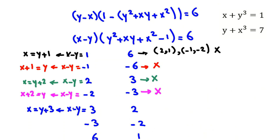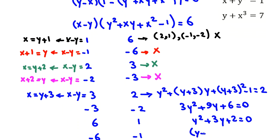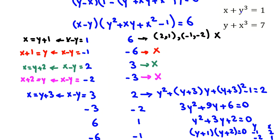For x minus y equals 3: x equals y plus 3. Replacing x with y plus 3 gives y squared plus (y+3)·y plus (y+3) squared minus 1 equals 2. Simplifying and dividing by 3: y squared plus 3y plus 2 equals 0, factoring as (y+1)(y+2) equals 0. So y equals −1 or y equals −2. With x equals y plus 3: when y equals −1, x equals 2; when y equals −2, x equals 1. Checking: (2, −1) works in both original equations! This is a valid answer.